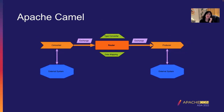At a high level, Camel has three core concepts: routes, processors, and components — all contained within the Camel context. At the very core is its routing engine, which allows you to define your own routing rules and makes no assumptions about what kind of data you'll be working with. The Camel context has several services within it, including the one that contains the components you define and use.